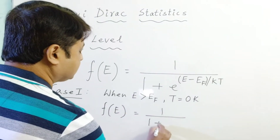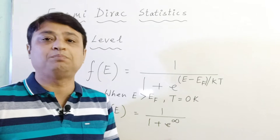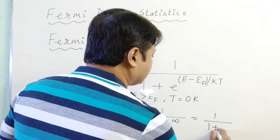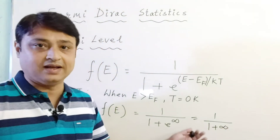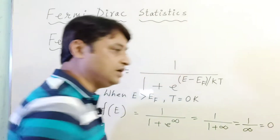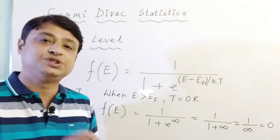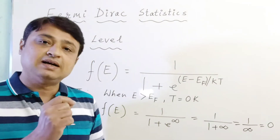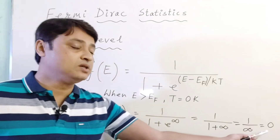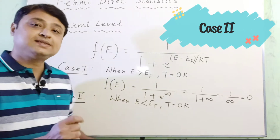So f(E) = 1 / (1 + e^∞). Since e^∞ = ∞, this becomes 1 / (1 + ∞). Since infinity is much greater than 1, we can neglect the 1, giving 1/∞ = 0. Therefore, when E > Ef at T = 0 Kelvin, f(E) = 0, meaning the probability of occupancy of an electron at that energy level is zero.